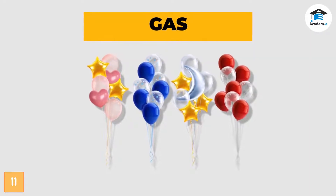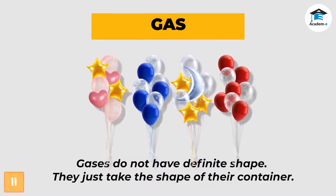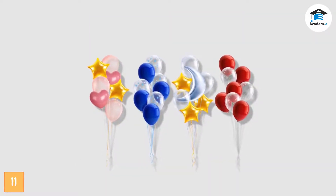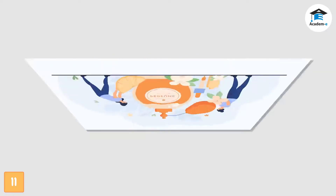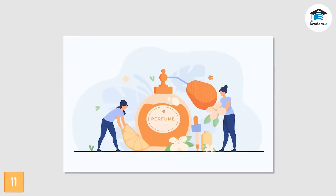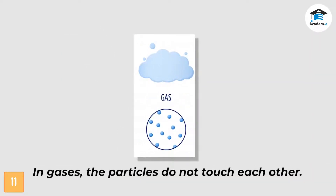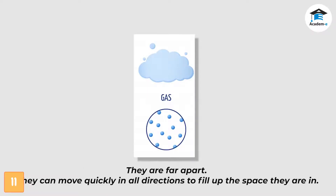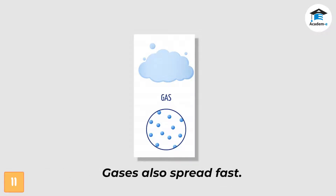Look at the pictures of balloons — describe their shapes. Gases do not have definite shape; they just take the shape of their container. Do all the balloons look the same? Do they have the same shape? What happens when you open a bottle of perfume? Can your classmates smell the scent? In gases, the particles do not touch each other — they are far apart. Since there are no attractive forces between them, they can move quickly in all directions to fill up the space they are in. Gases do not have definite volume; they fill the area or container that holds them. Gases also spread fast.